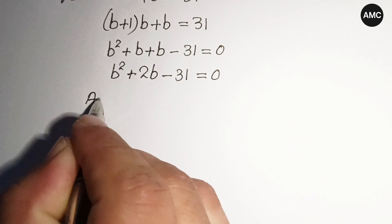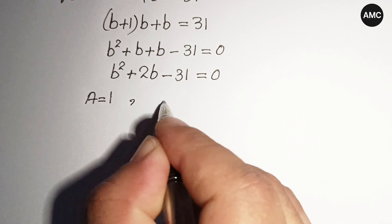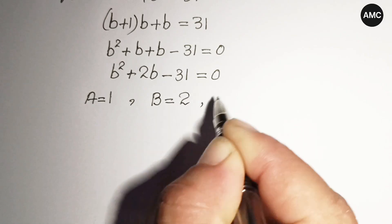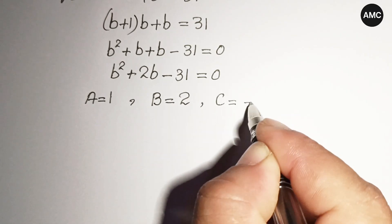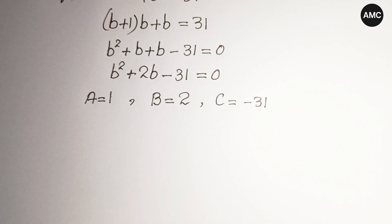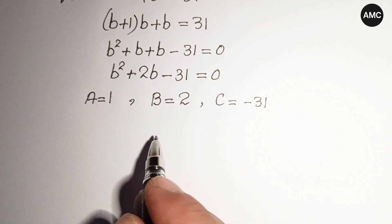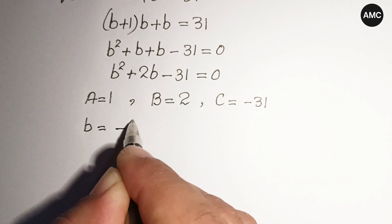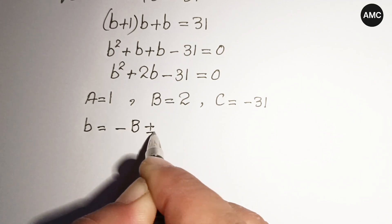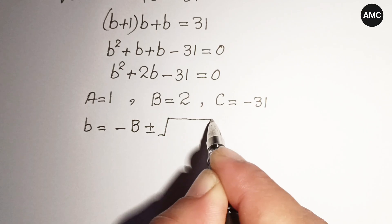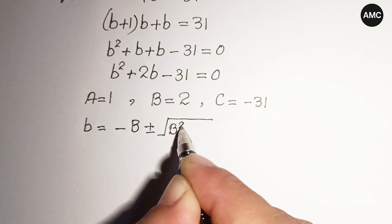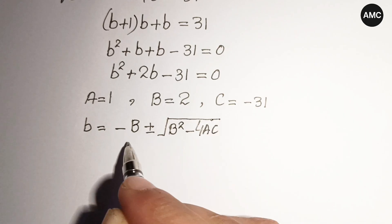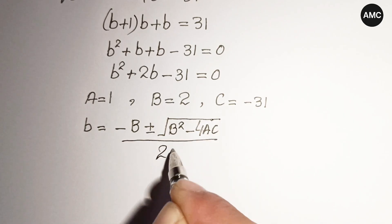This is a quadratic equation which we solve using the quadratic formula. Here the coefficient a equals 1, b equals 2, and c equals negative 31. The quadratic formula gives b equals negative b plus or minus square root of b squared minus 4ac, all over 2a.